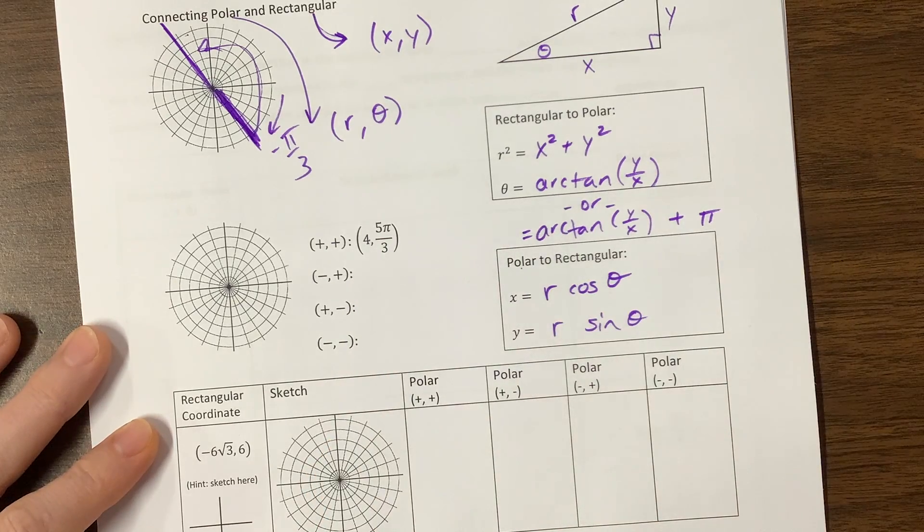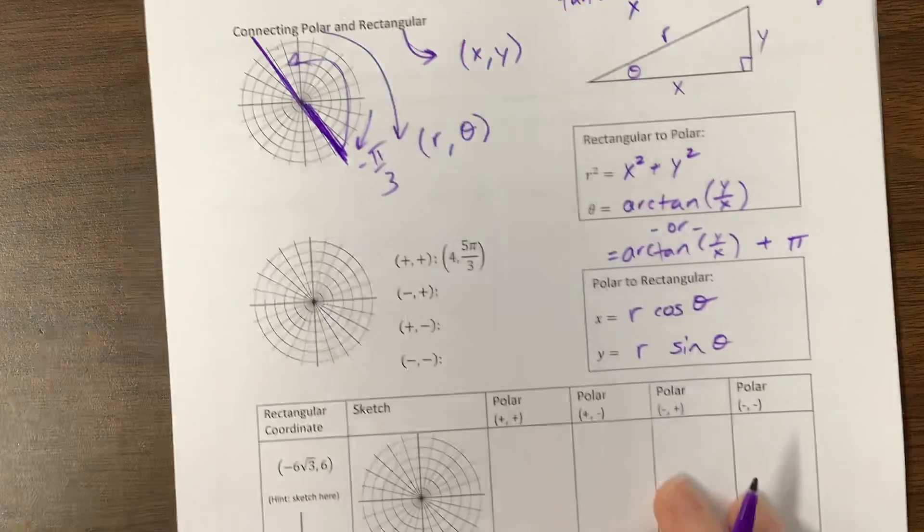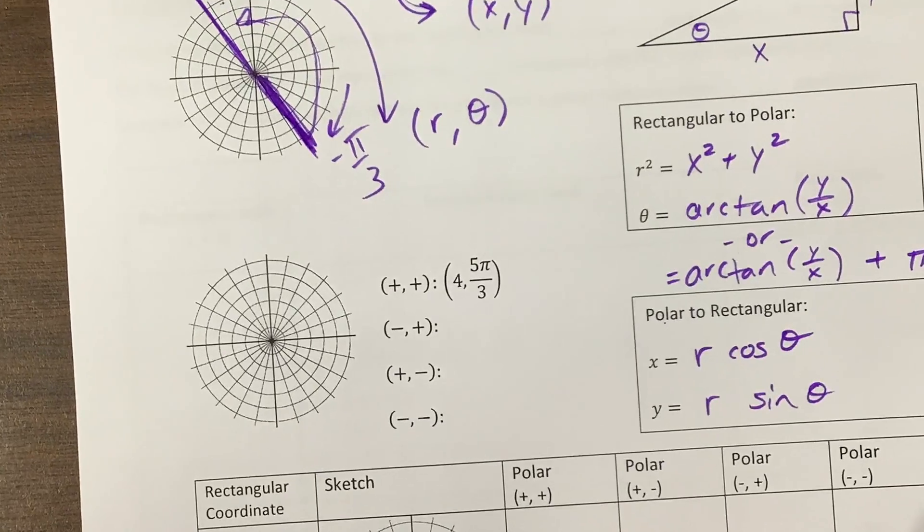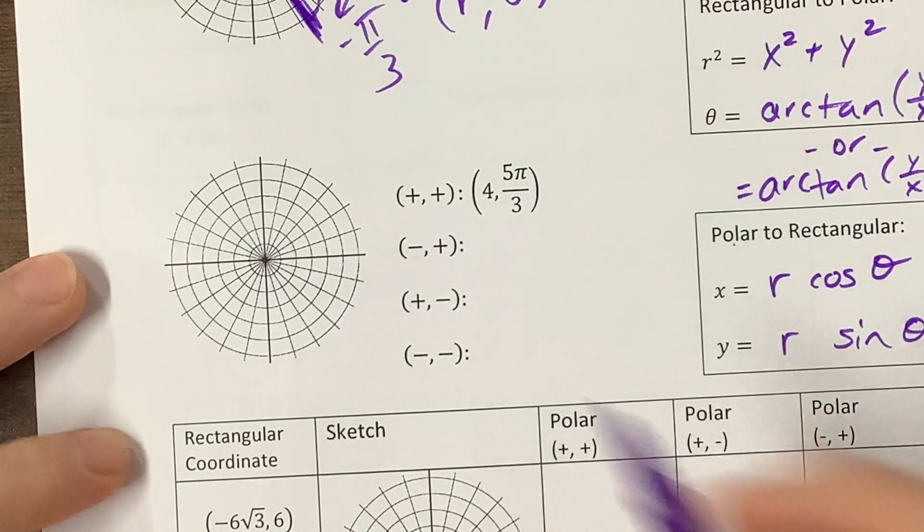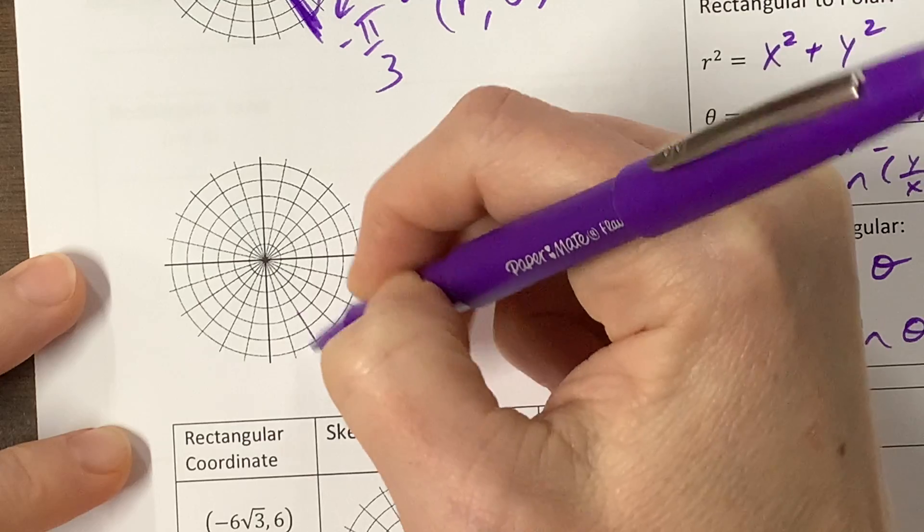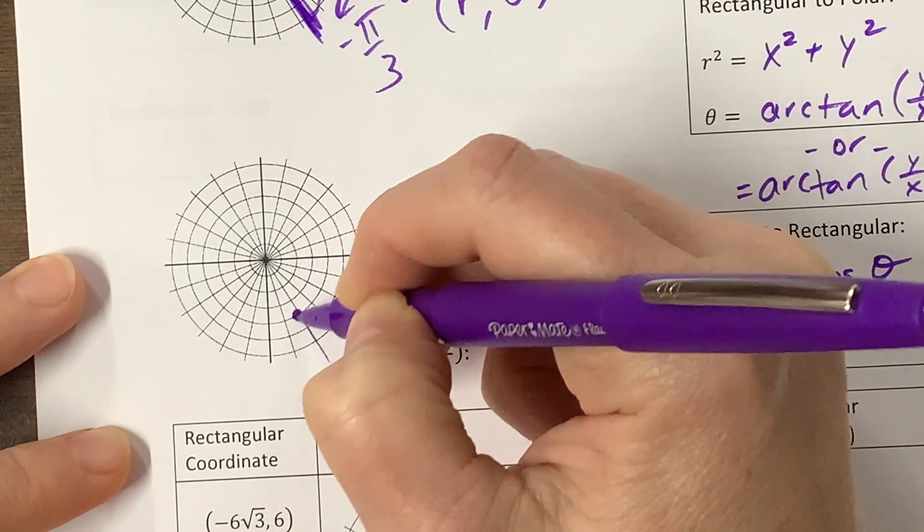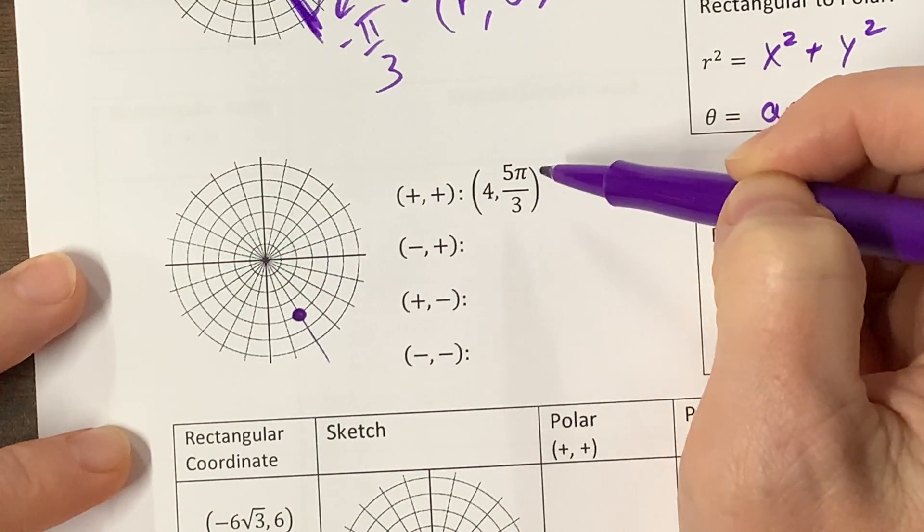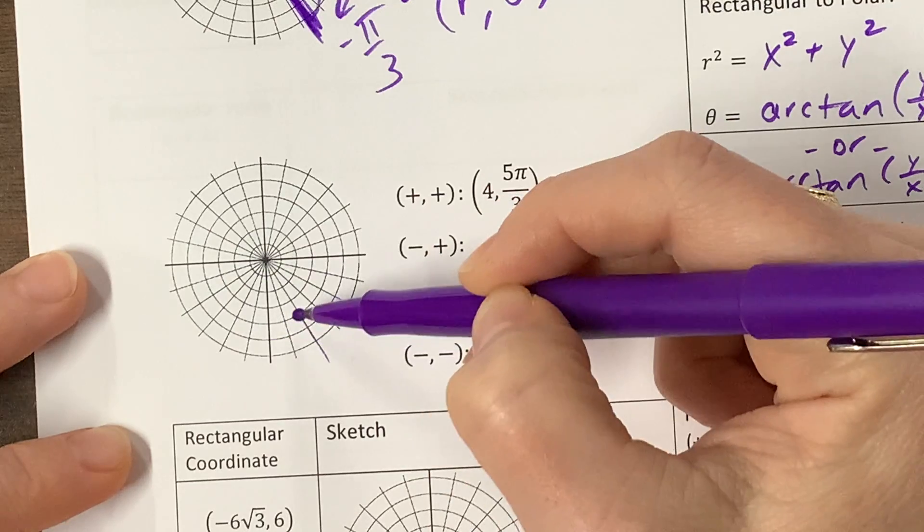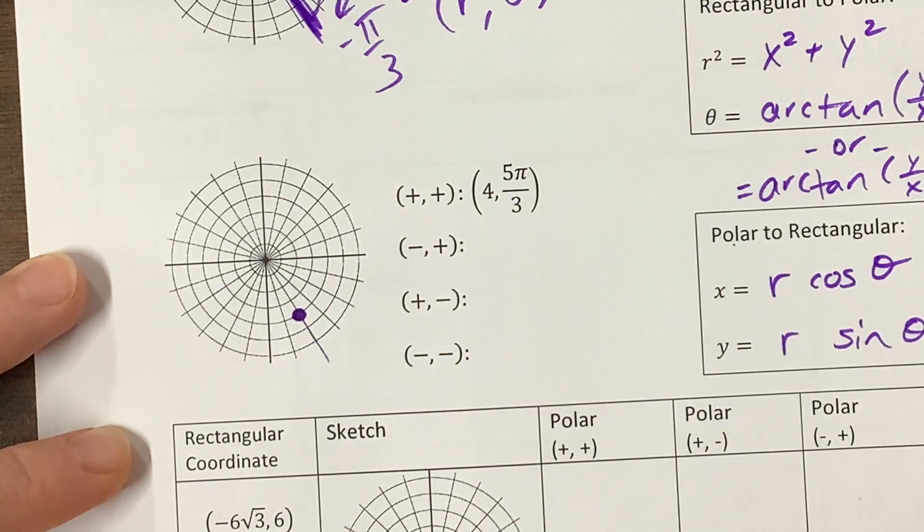Say I have the point (4, 5π over 3). Let's plot that point first and then see if we can write it other ways. So, if I come along, 5π over 3 is going to be this line here. And we come out and we have to come a radius of 1, 2, 3, I think this is 4. Okay, so we went, we found this positive angle. We went all the way around to 5π over 3. And then we came out a positive radius, 1, 2, 3, 4, and there we were.